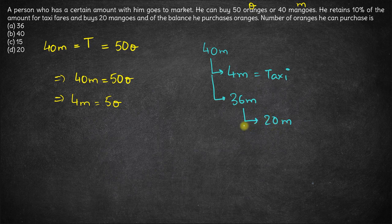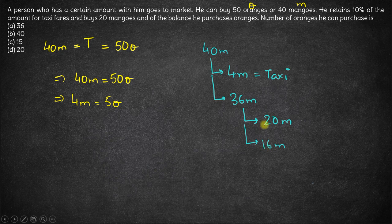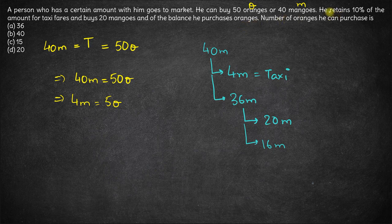Now with this amount, he goes to buy oranges. So the number of oranges that he can purchase is what?